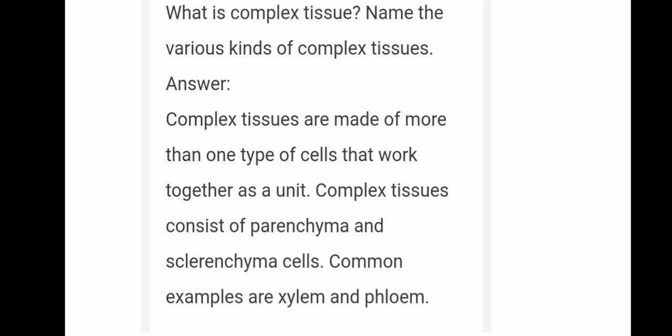Another question: What is complex tissue? Name the various kinds of complex tissues. Complex tissues are made of more than one type of cells that work together as a unit. Complex tissues consist of parenchyma and sclerenchyma cells. Common examples are xylem and phloem.